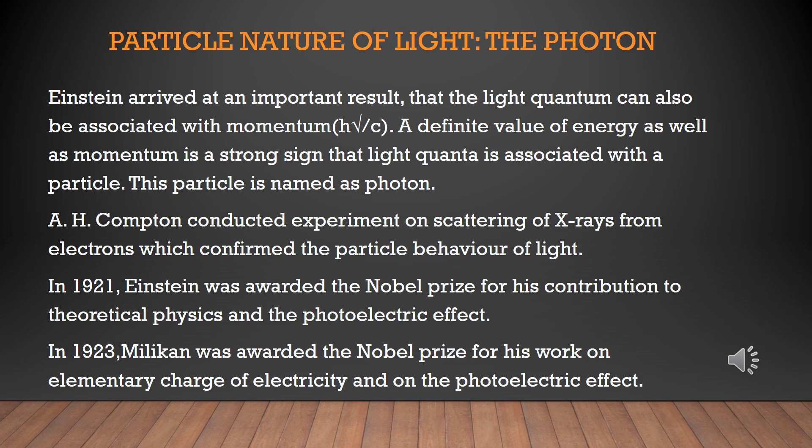Einstein was awarded the Nobel Prize for his contribution to theoretical physics and the photoelectric effect. In 1923, Millikan was awarded the Nobel Prize for his work on elementary charge of electricity and on photoelectric effect.